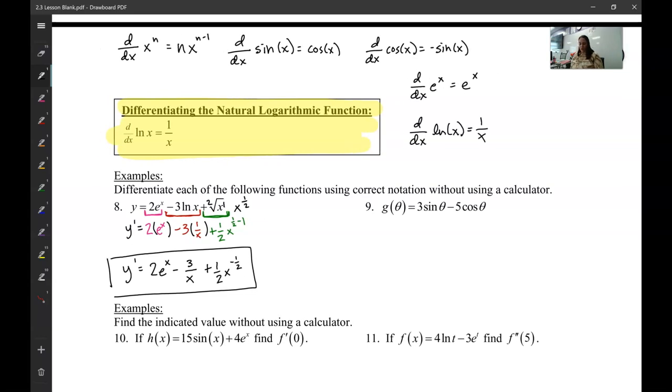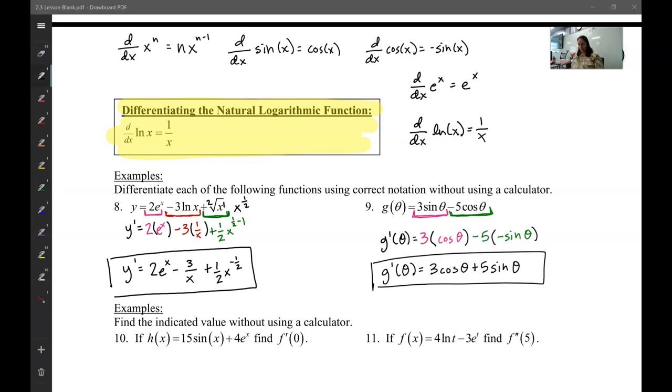I want you to try g on your own, going piece by piece, just like we did here. So differentiating the first piece and then the second piece. So pause the video and try that one. You should have gotten this. The 3 goes outside. Take the derivative of sine. Negative 5 goes outside. Take the derivative of cosine. And then we simplify.